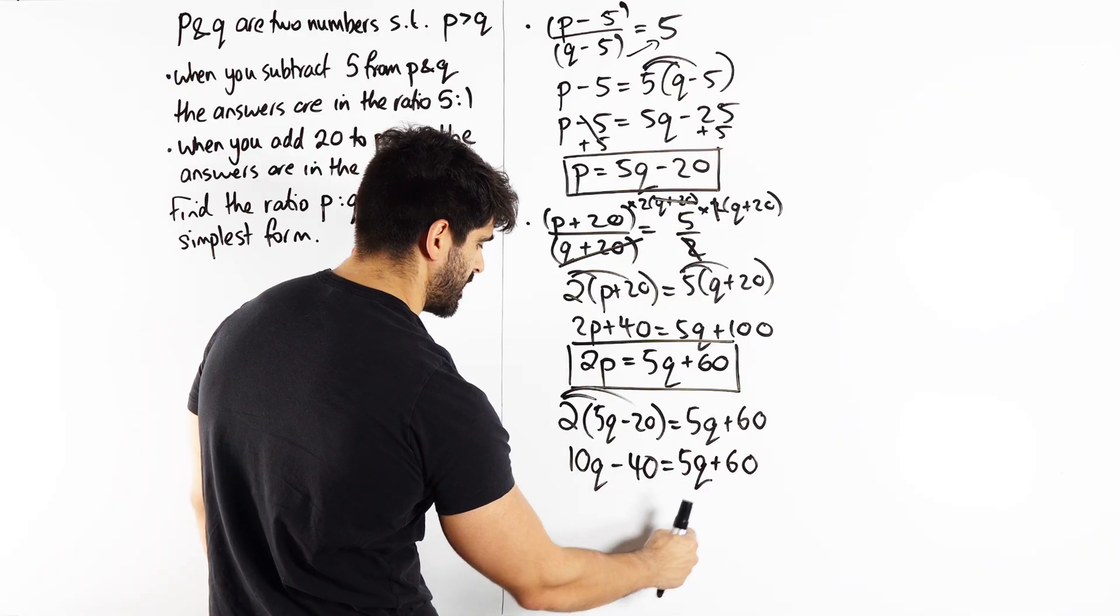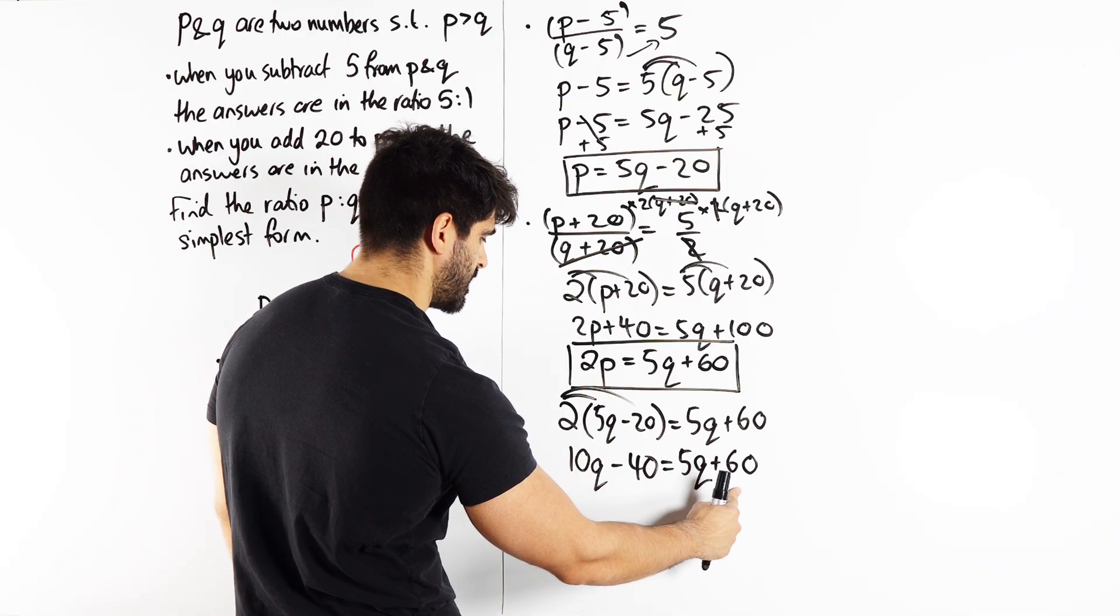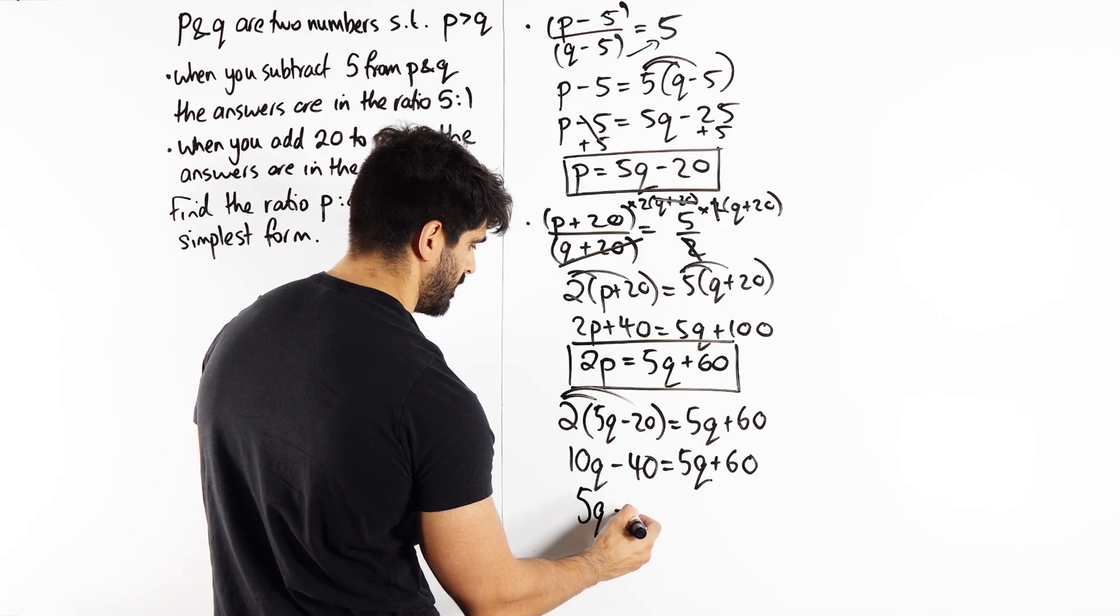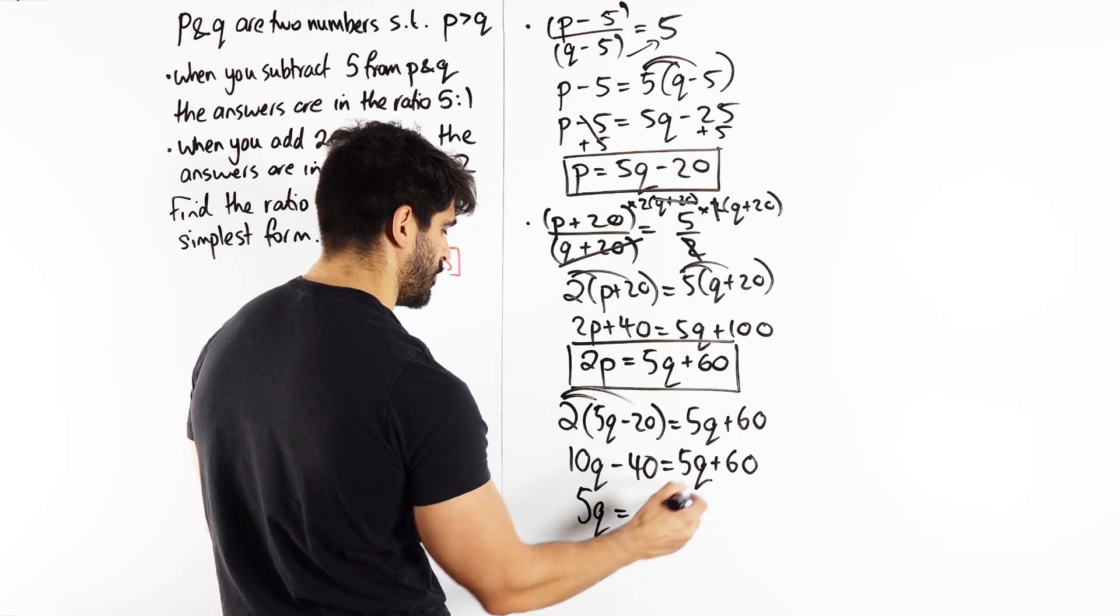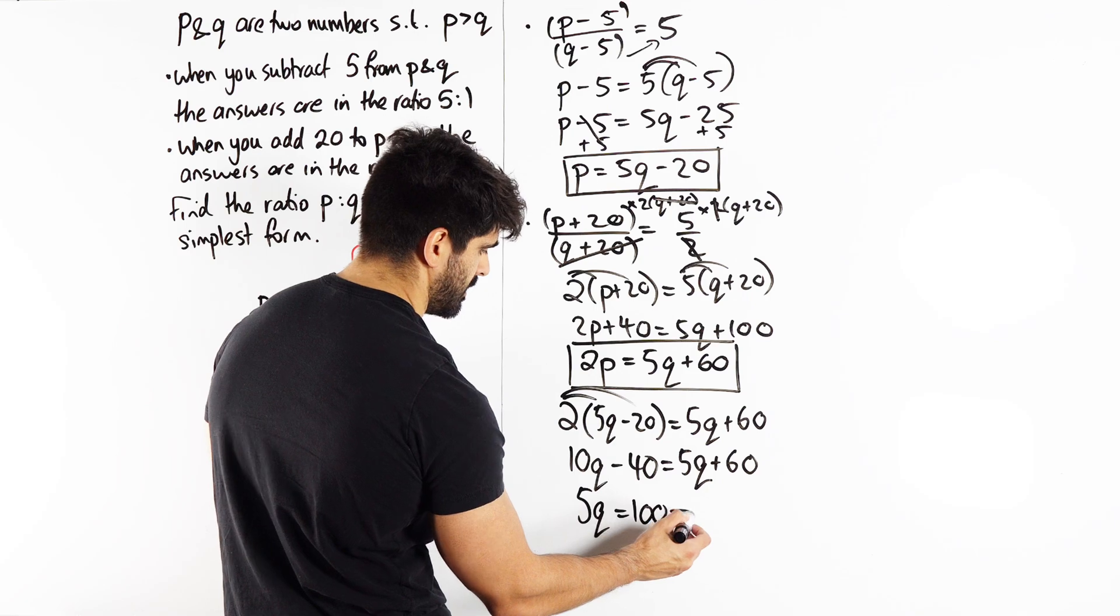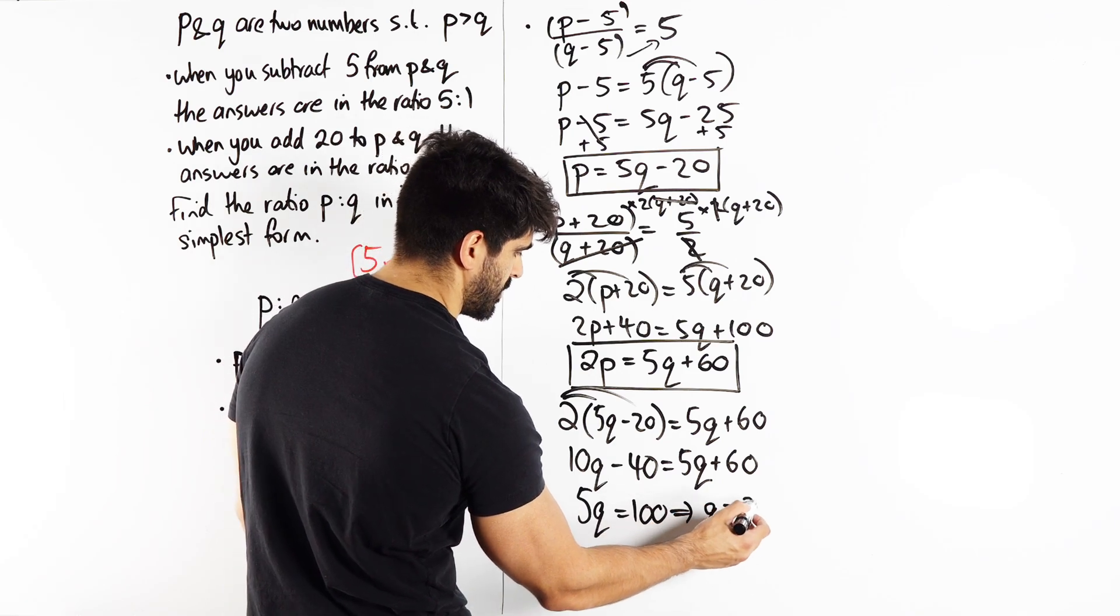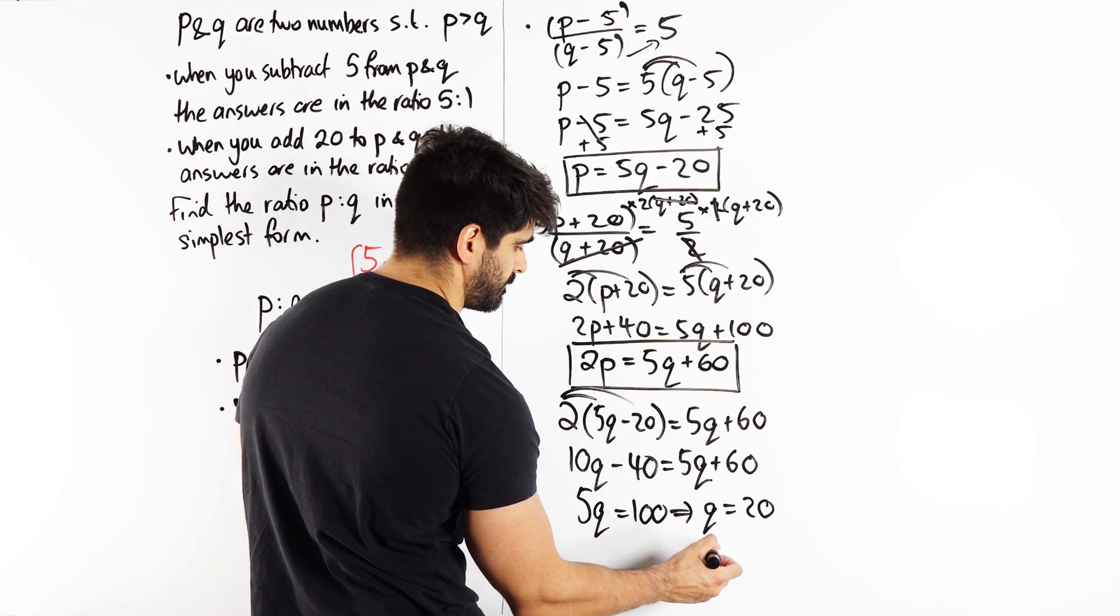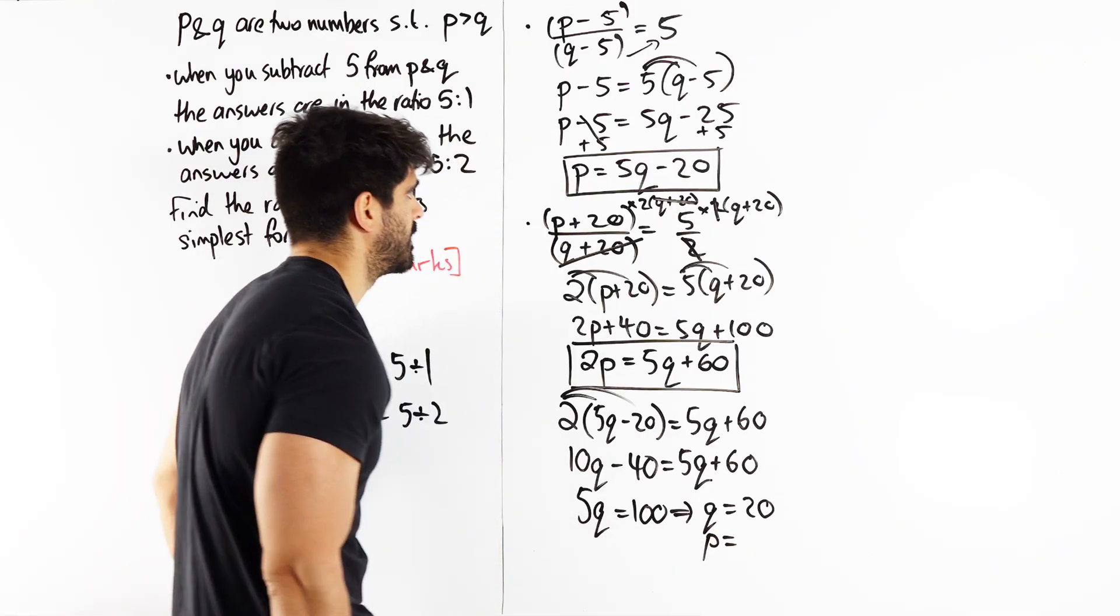So we're going to subtract 5Q and we're going to add 40. So subtracting 5Q we get 5Q. Then we're going to add the 40, we get 100. Divide by 5, Q is 20.